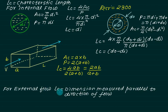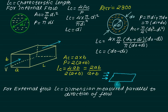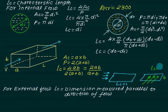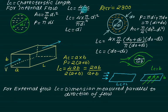For external flow, the characteristic length is the dimension measured parallel to the direction of flow. If flow is along the length of a plate, LC equals the length L. If flow is along the width of the plate, LC equals b. For a circular cylinder with flow parallel to its diameter, LC equals the diameter d. These definitions are straightforward for external flow.